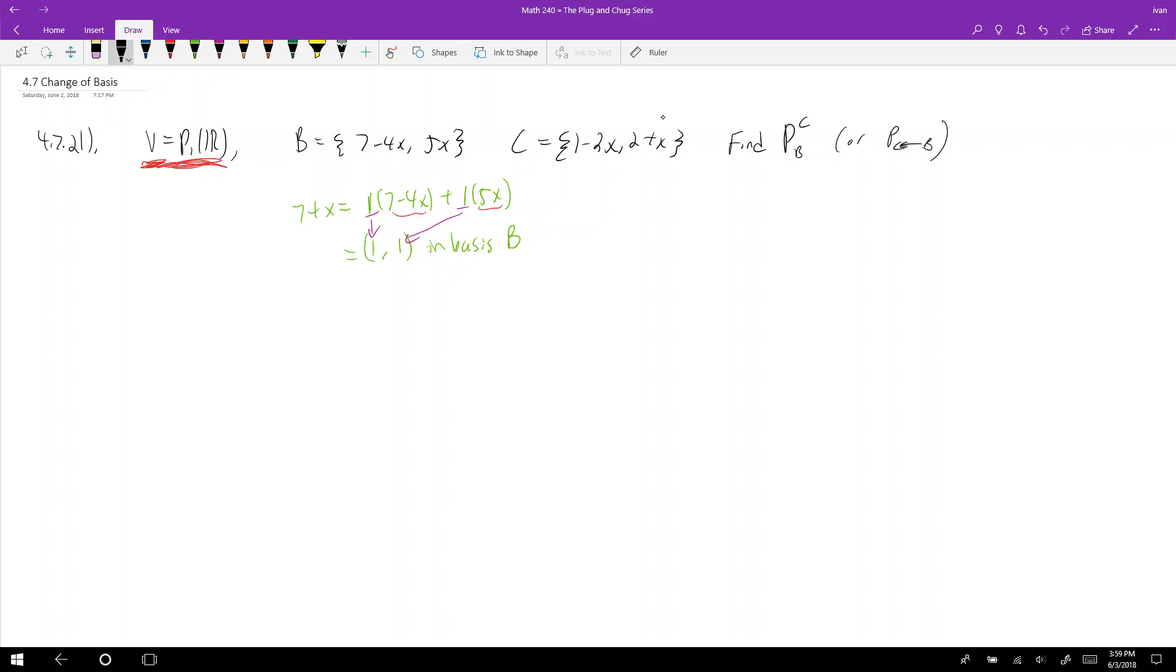So what is change of basis then? Well, let's say I have this polynomial 7 plus x. What if I wanted to express it in terms of C instead? What is 7 plus x in terms of what times 1 minus 2x plus what times 2 plus x? I know in B, it's (1,1), but in C, I don't know what that is. So this is what change of basis matrix does. Essentially, it helps us find a matrix that I can take this matrix, and then I'll multiply (1,1) by it, and then they'll give me this answer right here.